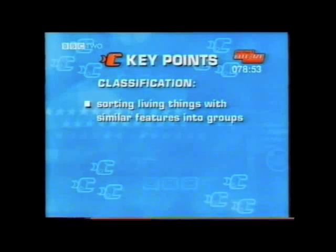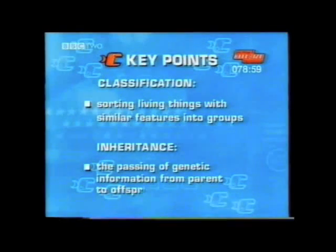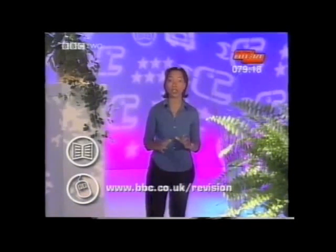Remember, classification is the sorting of living things with similar features into groups, and inheritance is the passing on of genetic information from parent to offspring. This brings us to the end of Variation, Classification and Inheritance. If you're not sure what causes variation, you could run through this unit again checking out the key points. The website and the book have further information on the subject.